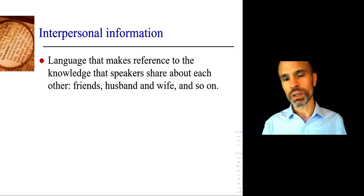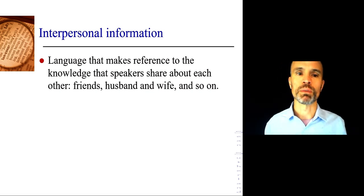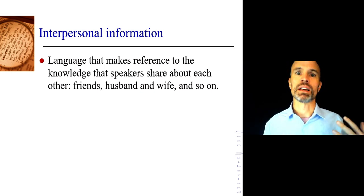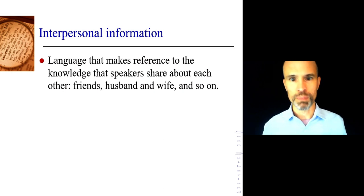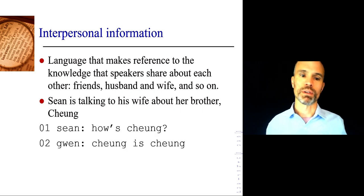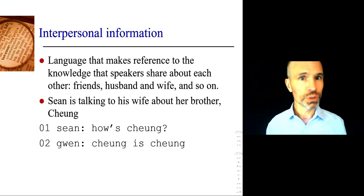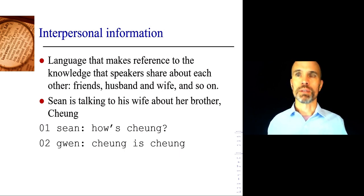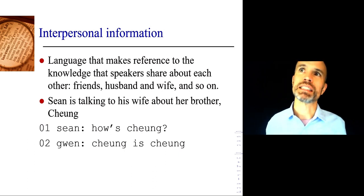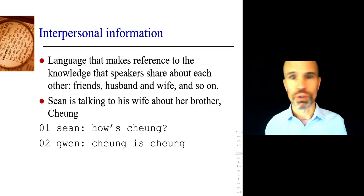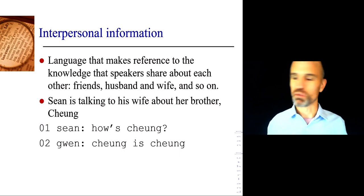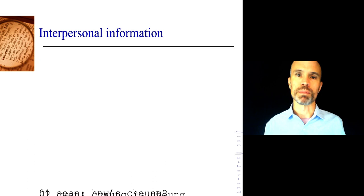Interpersonal information involves shared knowledge about each other — taking shortcuts because you're speaking to people you know. For example, if I'm talking to my wife about her brother and say 'how's Chang?' and she says 'Chang is Chang' — you can interpret this to an extent, but you don't know Chang. You don't know if it means he's friendly and happy-go-lucky or serious and reserved. You need to know him personally to fully make sense of that.